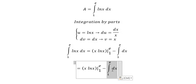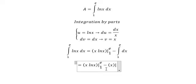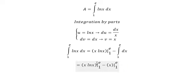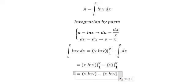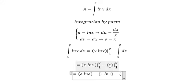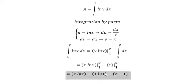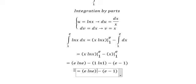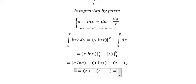The integral of 1 dx gives us x, evaluated from 1 to e. Substituting the bounds: we get [e·ln(e) − 1·ln(1)] − [e − 1]. Since ln(e) = 1, that term gives e, and ln(1) = 0, so that term vanishes. This gives e − (e − 1), and the negatives cancel to give positive 1.